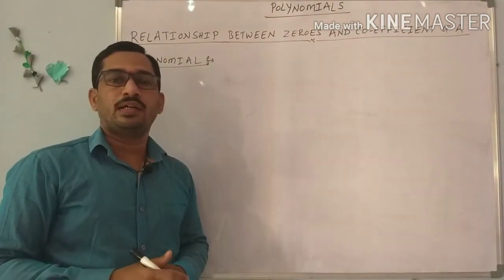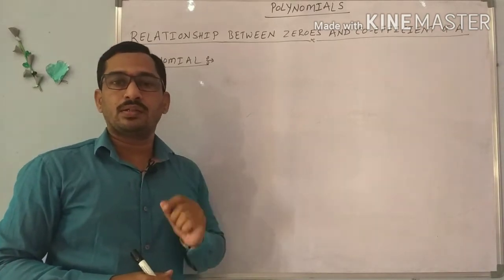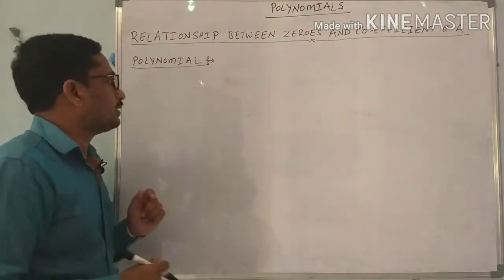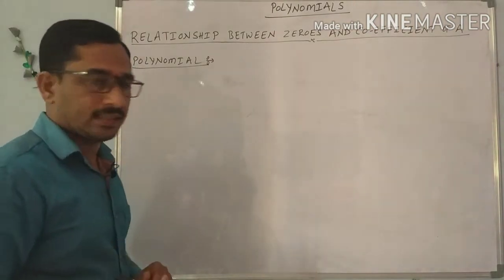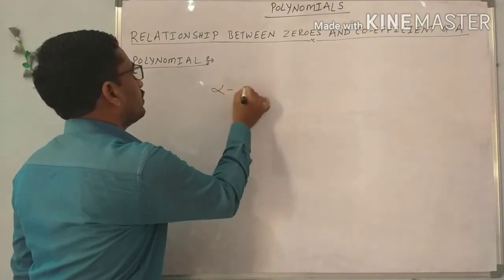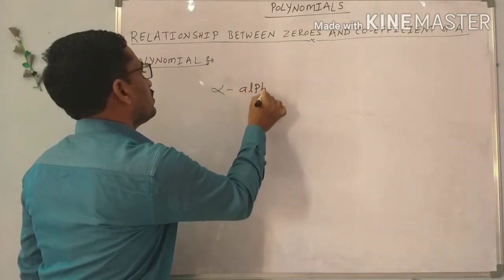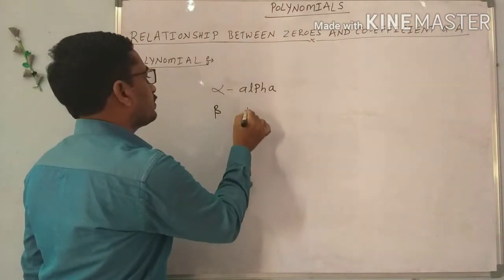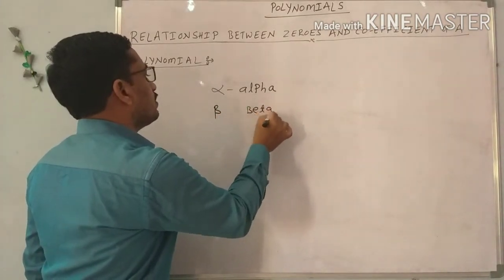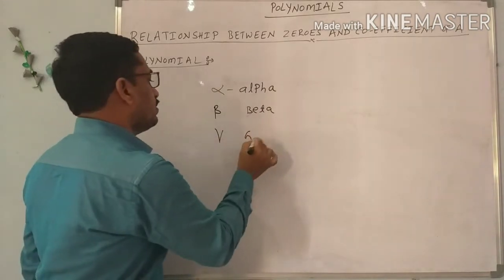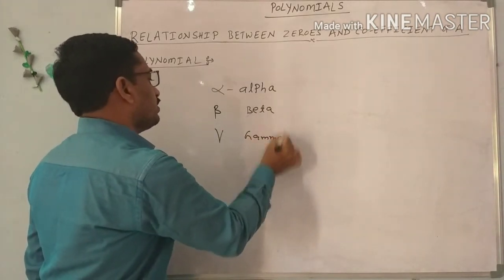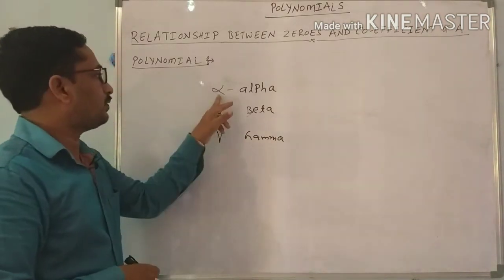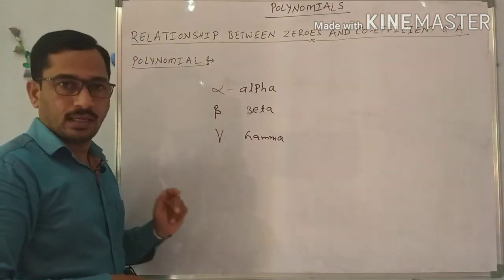Now I will explore the relationship between the zeros and the coefficients of a quadratic polynomial. Before starting this, I use some Greek letters here. The Greek letters are alpha, beta, and gamma. I use these letters to represent the zeros of a polynomial.